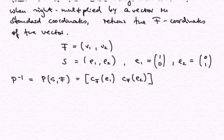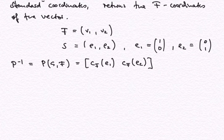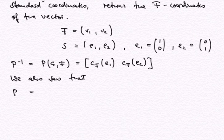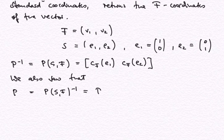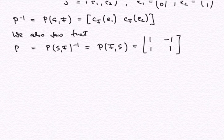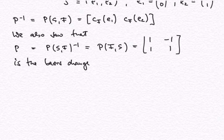We also saw that P, which is the inverse of the basis change matrix from S to F, is the basis change matrix in the reverse direction — from F to S — which is numerically given by [1, -1; 1, 1] in this example. So this is the basis change matrix from F to S.